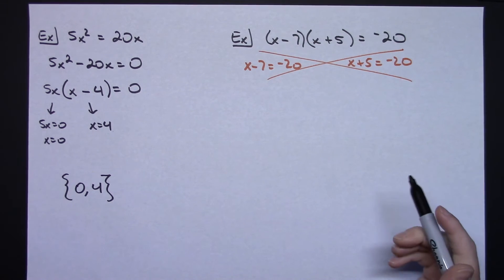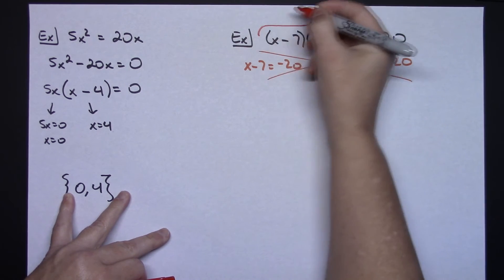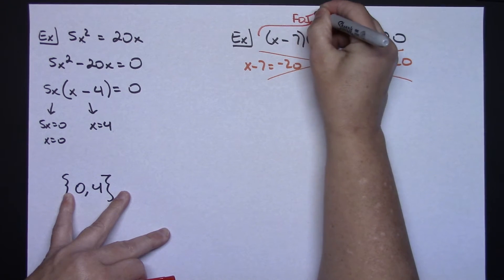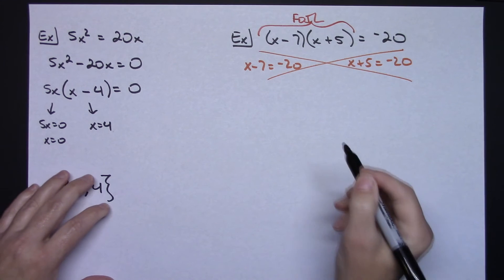The only reason I pointed that out is because a lot of students attempt to do that. So, the only way to do this, you have to FOIL this out first. You have to take this expression on the left-hand side, FOIL it out, multiply it all out and then move that minus 20 over.